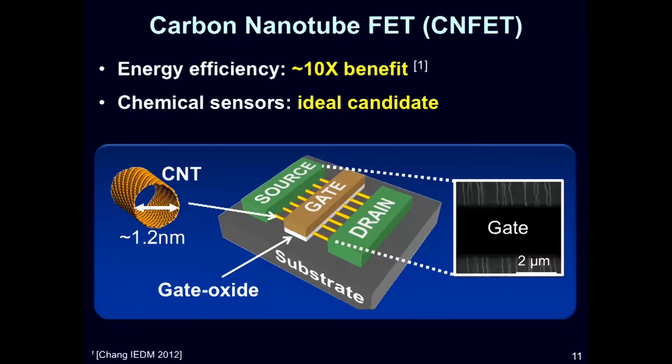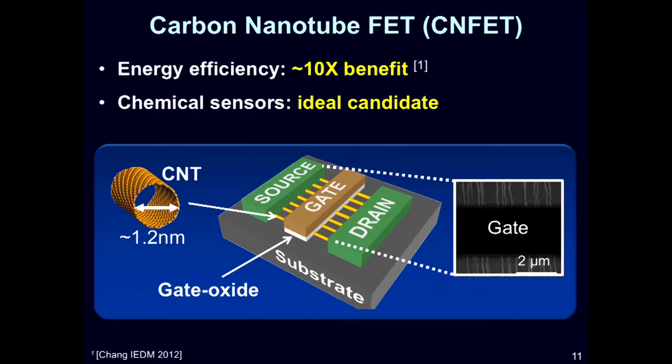So if we want to begin building a nanosystem, we have to start with a promising emerging nanotechnology. One of the technologies we focus on in my group are called carbon nanotubes. A carbon nanotube, or CNT, is just a rolled-up sheet of graphene to form a nanocylinder with a diameter of around one to one-and-a-half nanometers. A carbon nanotube field effect transistor, or CNFET, is formed by using the CNTs as the channel of the transistor, with traditional lithographically defined source, drain, and gate regions. Picture your silicon transistor — just remove the silicon in the channel, replace that with carbon nanotubes, and everything else stays exactly the same.